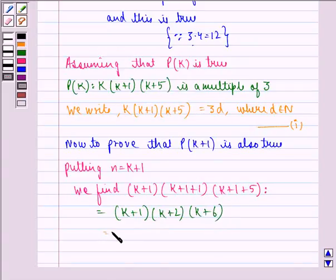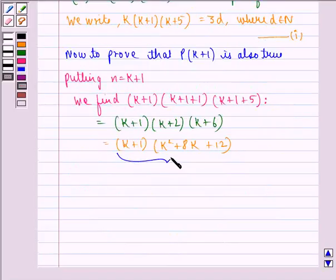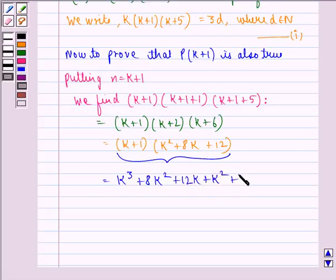That is equal to (k+1)(k²+8k+12). Now multiplying the two brackets, we get k³+8k²+12k+k²+8k+12. This is equal to k³+9k²+20k+12.